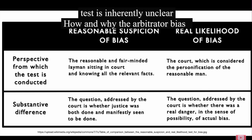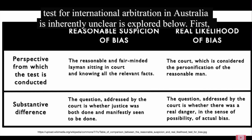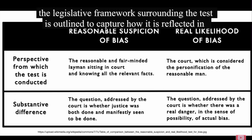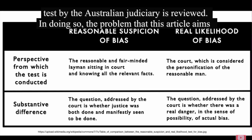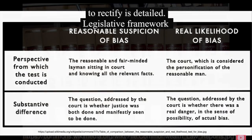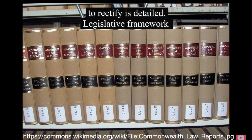Australia's arbitrator bias test is inherently unclear. How and why the arbitrator bias test for international arbitration in Australia is inherently unclear is explored below. First, the legislative framework surrounding the test is outlined to capture how it is reflected in Australian statute. This provides the relevant context to Part 2, where the application of this test by the Australian Judiciary is reviewed, detailing the problem that this article aims to rectify. Legislative framework.